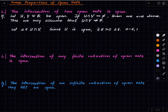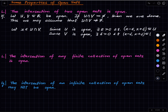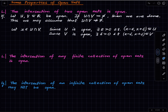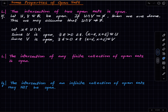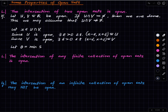And since V is open, there exists some delta > 0 such that (x − δ, x + δ) is contained in V.